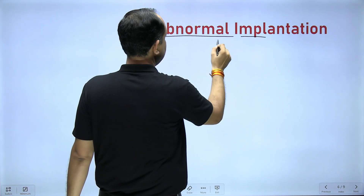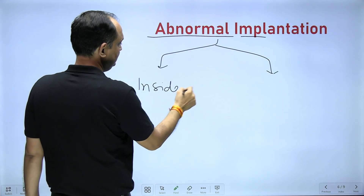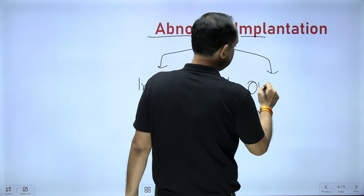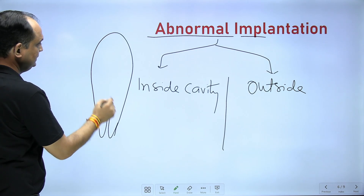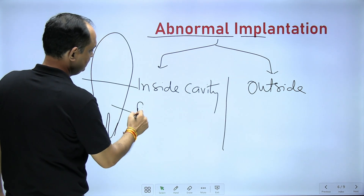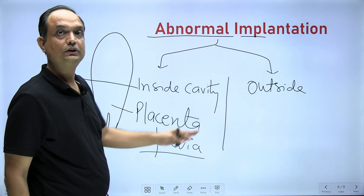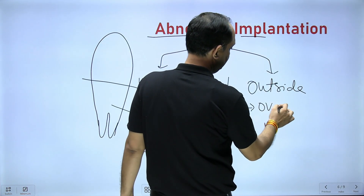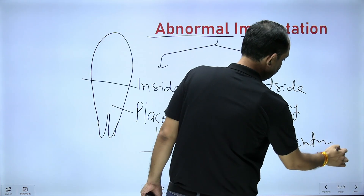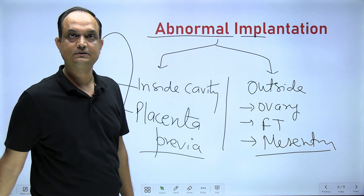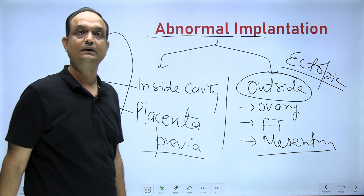For applied aspects, abnormal implantation can occur in two ways: abnormally inside the uterine cavity, or outside the cavity. If implantation occurs in the lower part of the uterine cavity, it leads to a condition known as placenta previa. If implantation occurs outside the uterine cavity — in the ovary, fallopian tube, mesentery, or pouch of Douglas — these are known as ectopic pregnancies, the most common type being fallopian tube pregnancy.